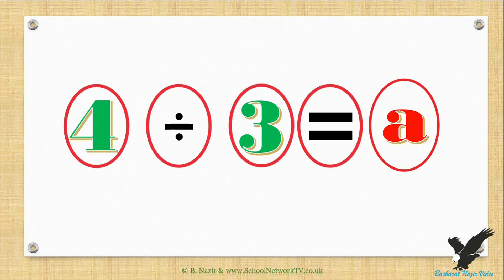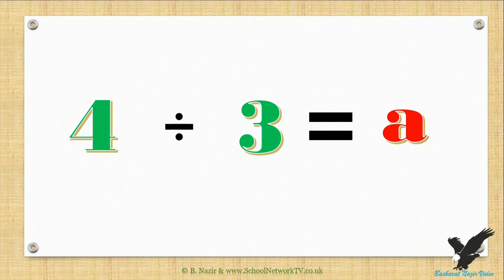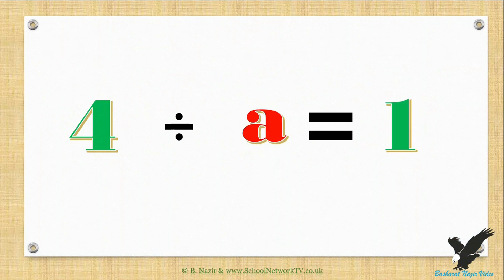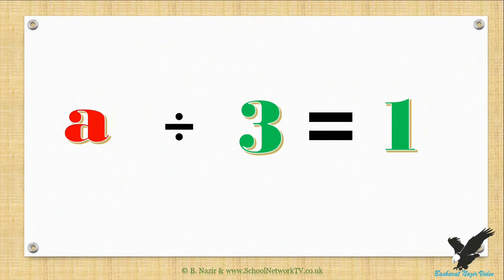Every equation will have at least one number missing, which will be replaced by a letter. You have to find this number — this process of finding the number is called solving the equation. Note that both sides of the equation are in balance, or equal to each other.